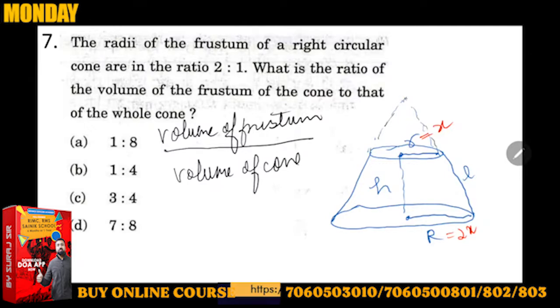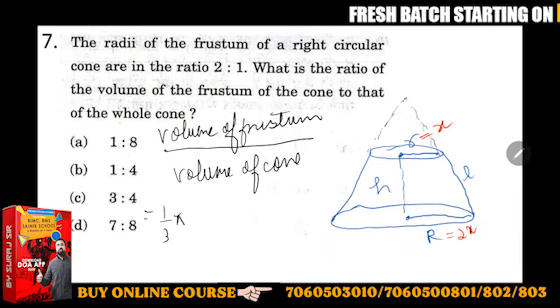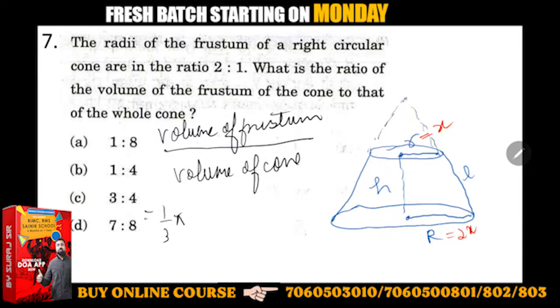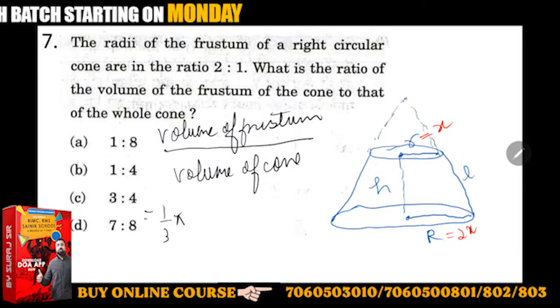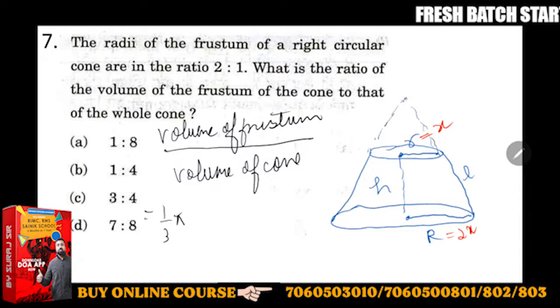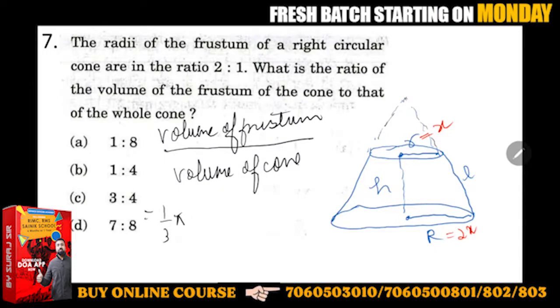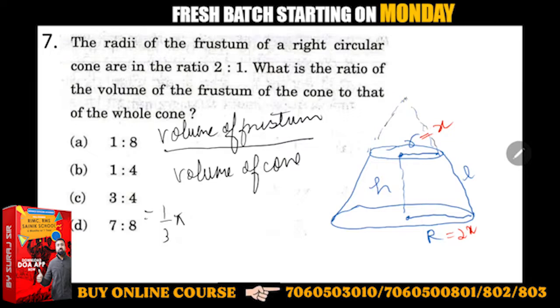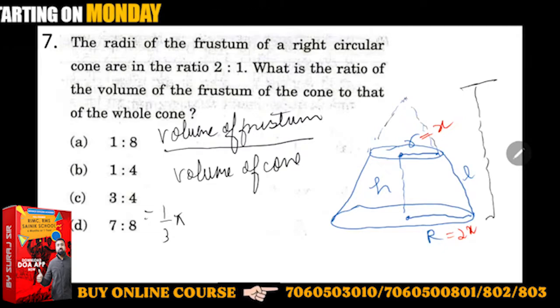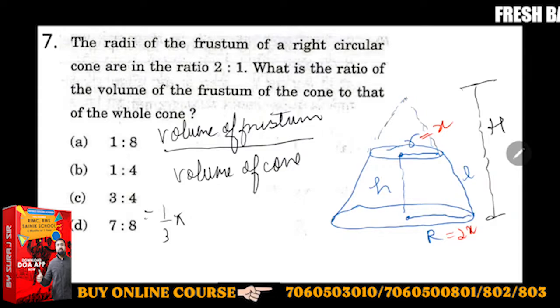The volume of frustum is (1/3)πh times, in brackets, capital R² plus small r² plus capital R into small r. The cone's height is capital H and frustum's height is small h.